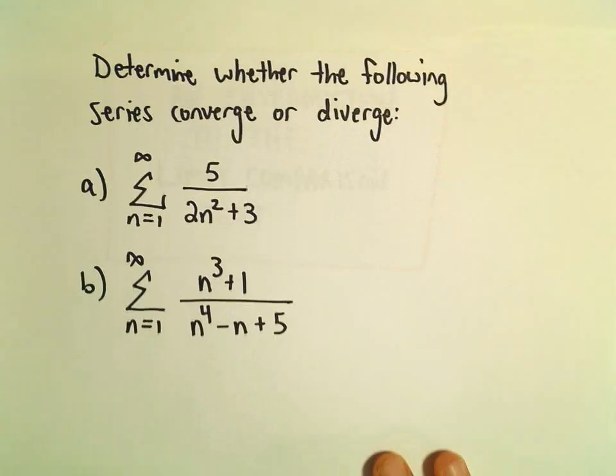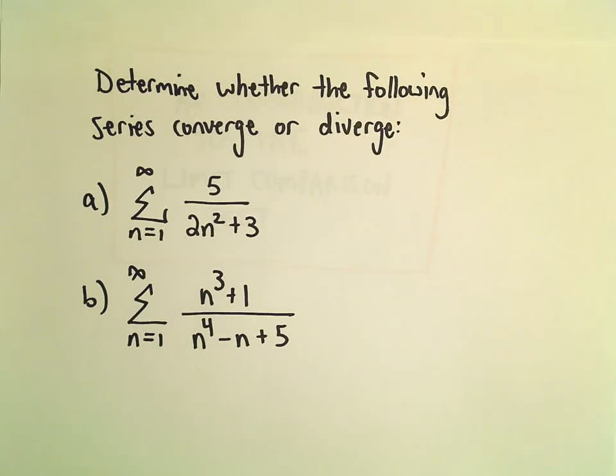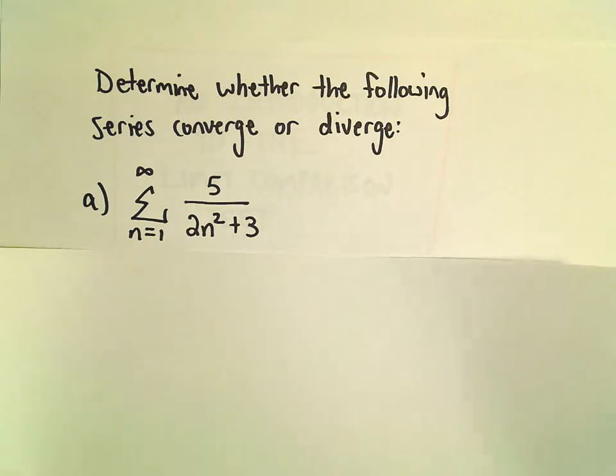All right, here we're going to look at some examples related to the limit comparison test. So in part A here, we have the series from 1 to infinity, 5 over 2n² plus 3.